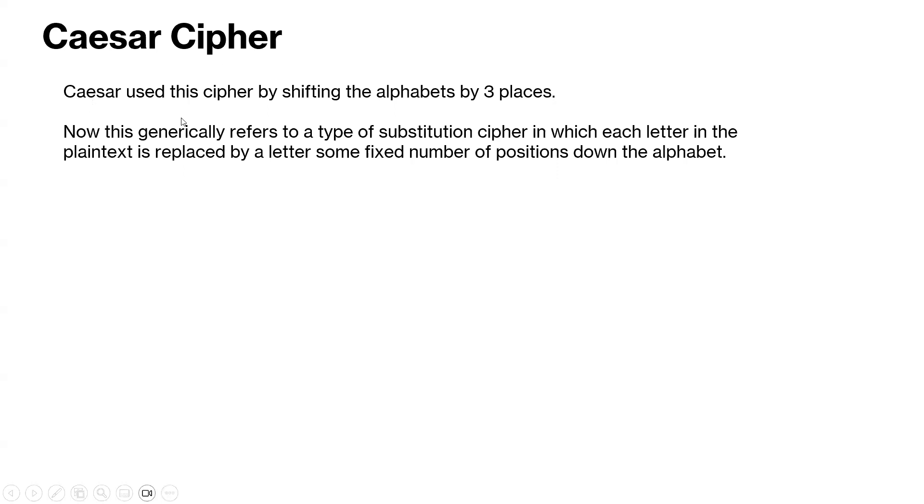Julius Caesar used this cipher by shifting the alphabet by three places. Now this generally refers to a type of substitution cipher in which each letter in the plaintext is replaced by a letter some fixed number of positions down the alphabet.